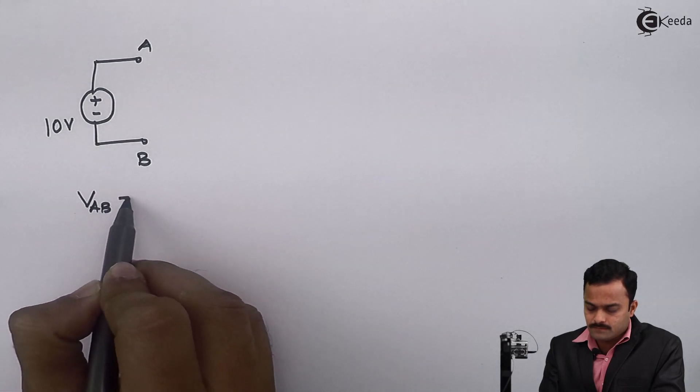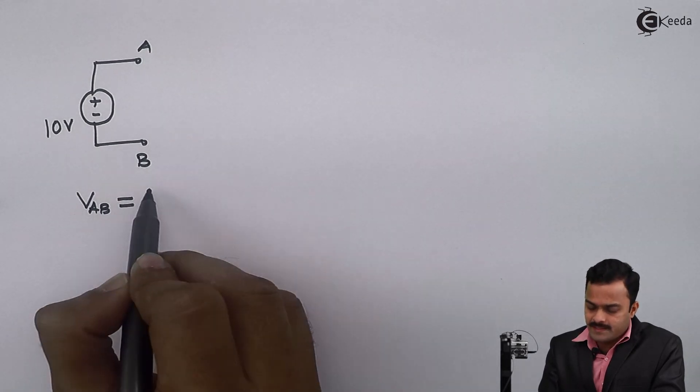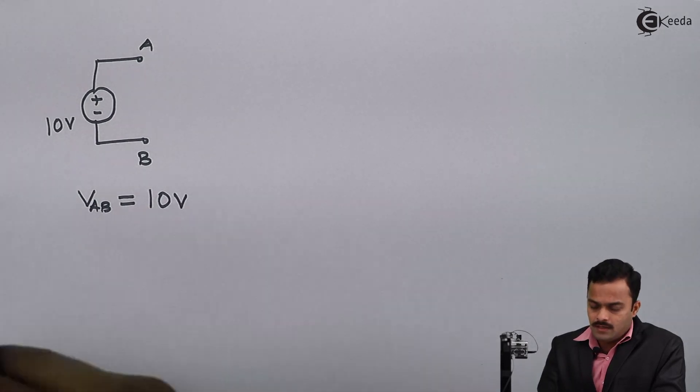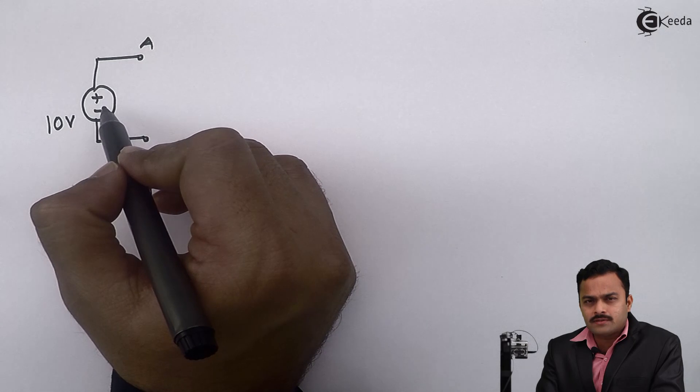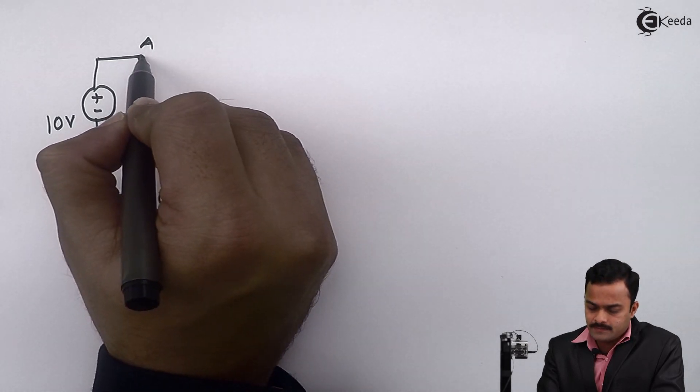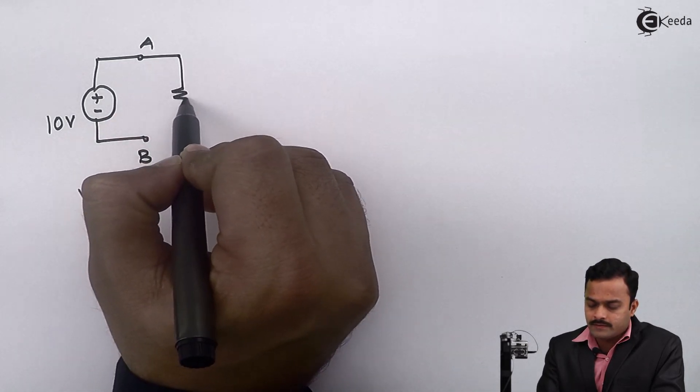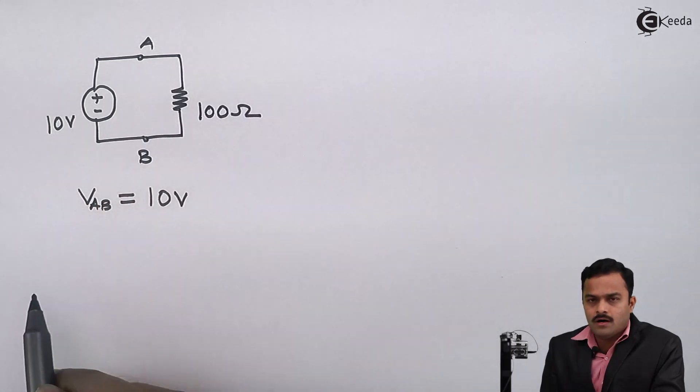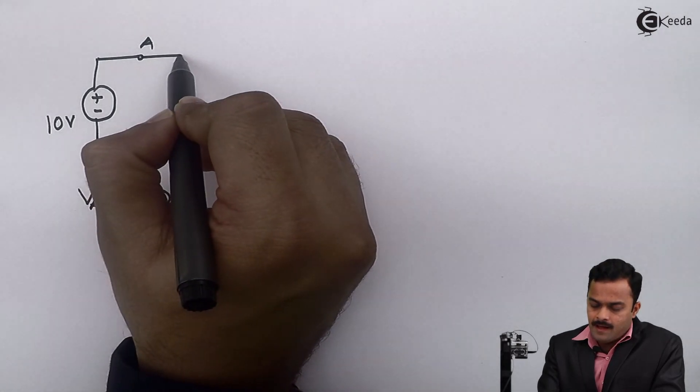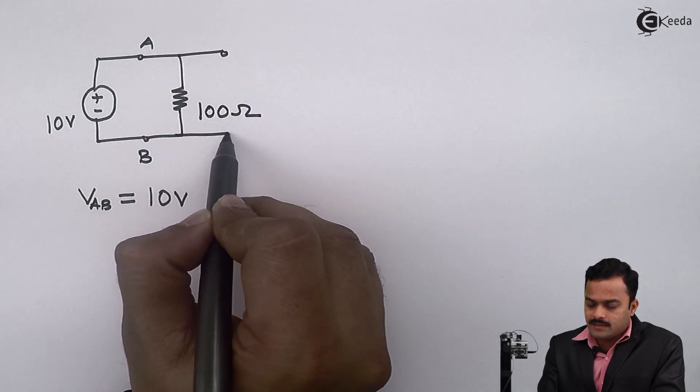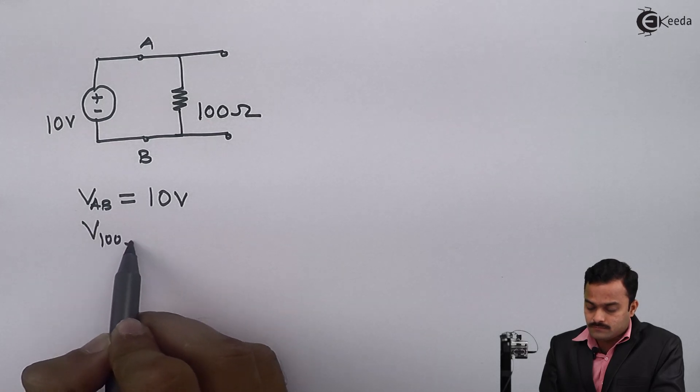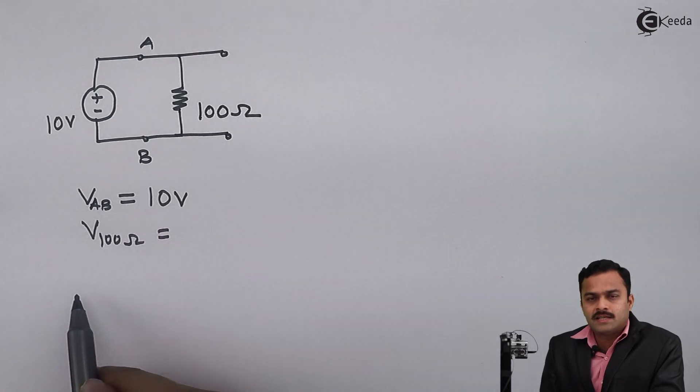The answer will be very simple: 10 volts. So to this voltage source, I'm connecting one resistance of 100 ohms. And this time I will ask a question: what is the voltage across 100 ohms? My answer will be the same, 10 volts.